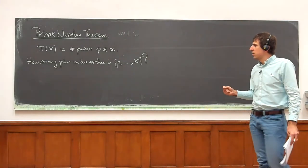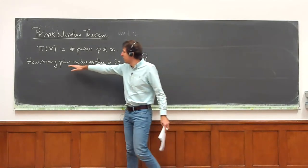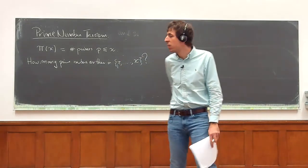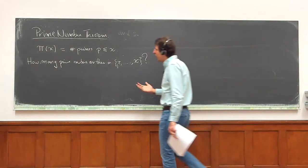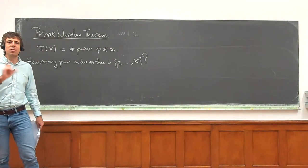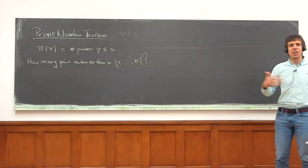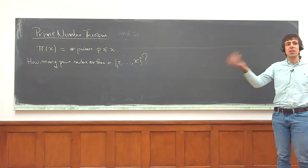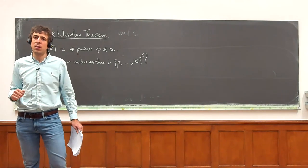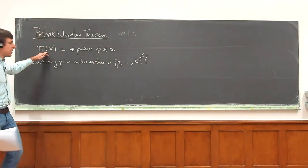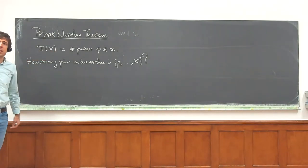Prime numbers are sort of the building blocks of numbers. I'm sure everyone knows what a prime number is — just an integer that is only divisible by itself and by 1. And if you've ever looked at primes, it's sort of clear that their density is a lot higher for small numbers than for large numbers. If you look at the numbers from 1 to 10, the density of primes is much bigger than if you look at the density of primes from, say, 10 to 100. So this is measuring exactly what this density is.